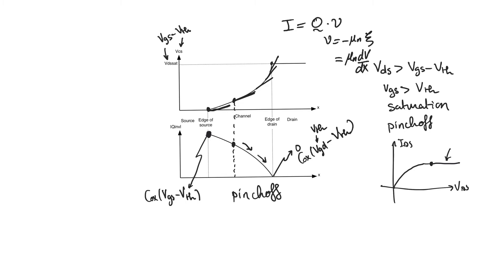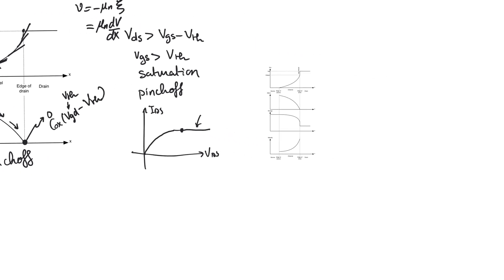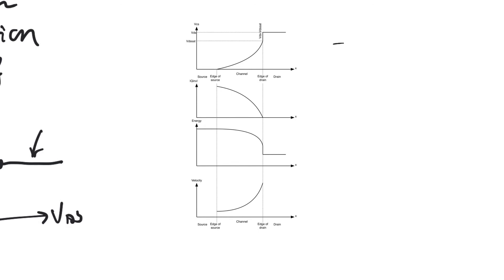We have zero charge at the drain, which should lead to zero current since current equals charge times velocity. But current is not zero — there is a finite value at the source end and at every point in the channel, all equal to I_sat = (K/2) × (VGS − V_threshold)². So how does current flow when charge is zero at the drain? Let's keep in mind I = Q × V and examine what happens when VDS is raised above VDS_sat.